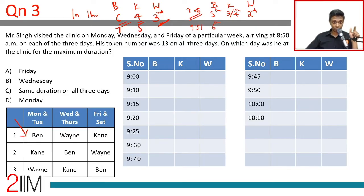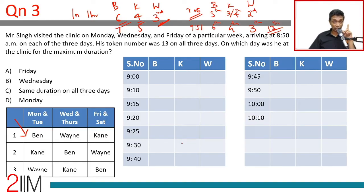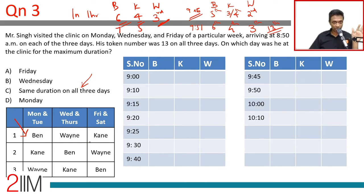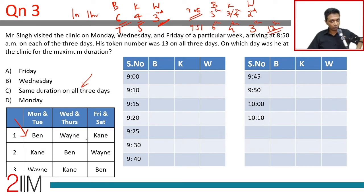So token number 13 will be inside at 9:51, meaning they entered at 9:50. Token number 13 enters at 9:50 on all days — that is clear. It was a nice number. On any given day, the 13th token enters at 9:50. I was tempted to say the same duration on all three days. But token number 13 could be going to Ben or Wayne — it's not Cain — depending on the day. The day they meet will change the total time spent.